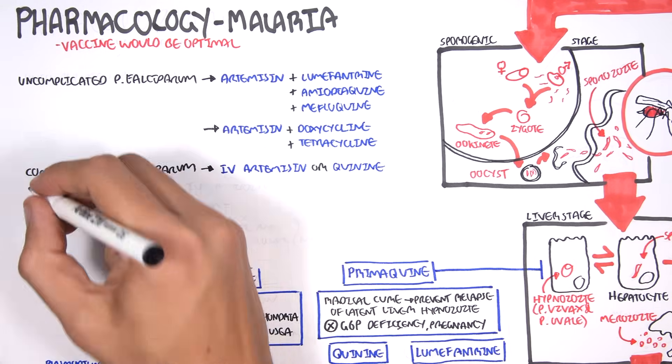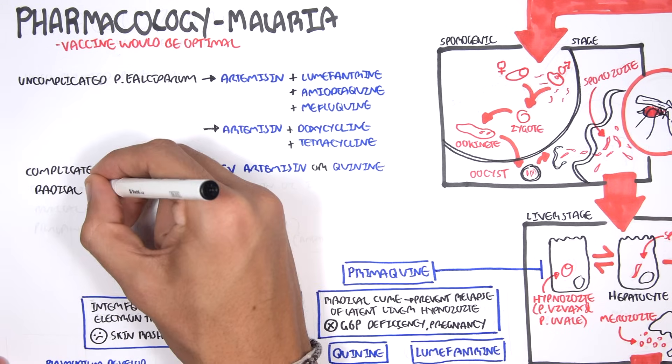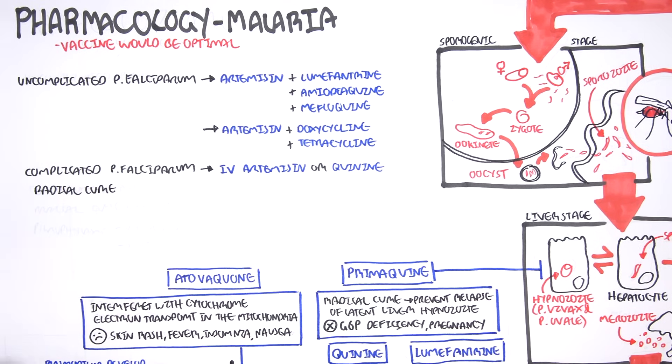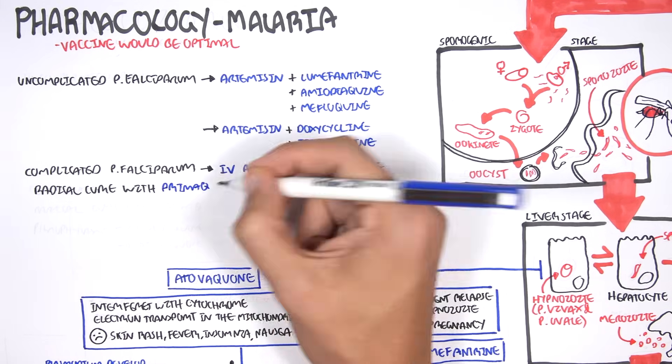For radical cure, which is basically targeting the dormant stages of the malaria parasite, targeting the ovale or vivax in the liver, we would give them primaquine.